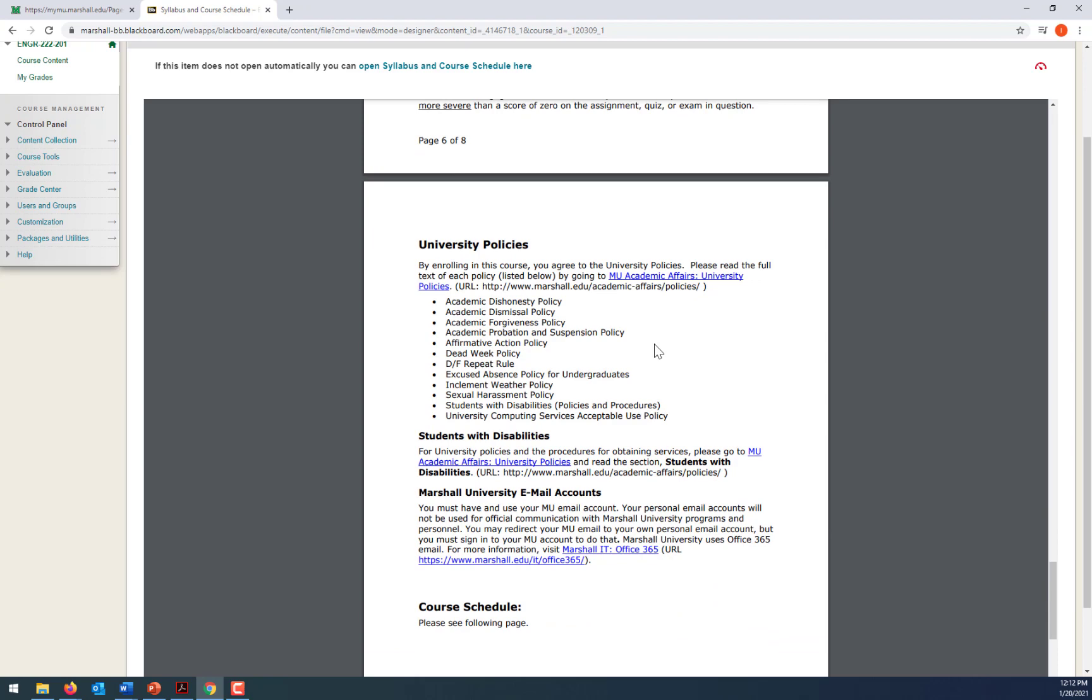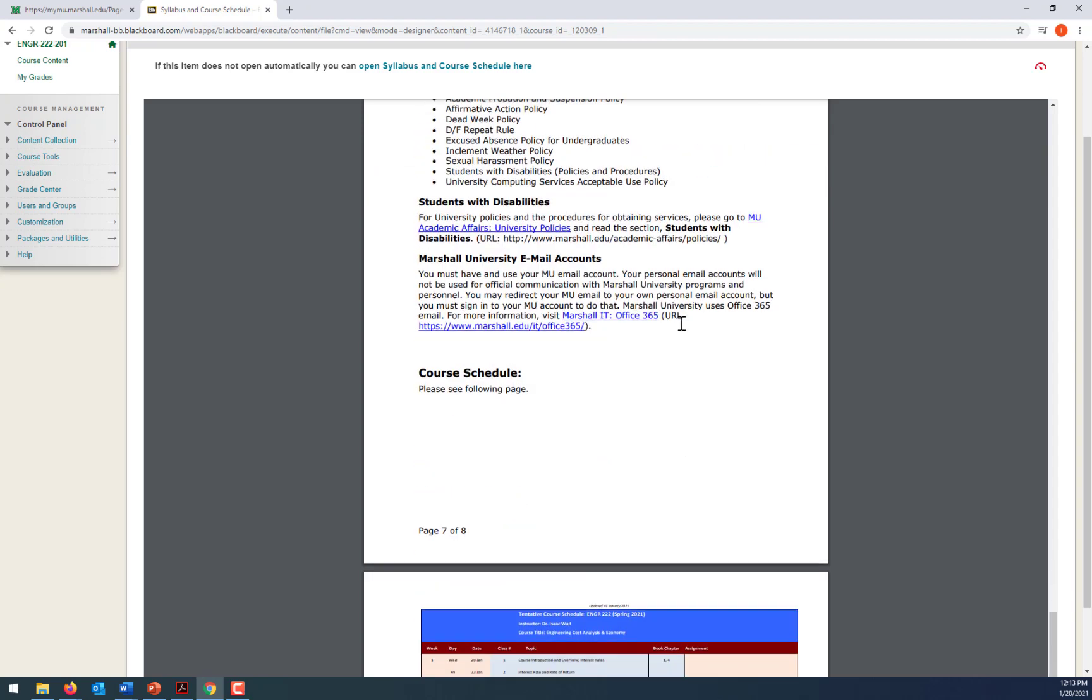There's a long list of university policies that I encourage you to review. Each of them can be found on the academic affairs website. If you're not in the habit of checking your Marshall email, you need to get into the habit. You can have it forward to a different email account if you want. I send out announcements to your Marshall email address, and if you need to get in touch with me, you should send me a message through your Marshall email address. They ask us not to communicate with students outside of their Marshall email address just because it's tough to know exactly the identity of the person that you're communicating with if it's not the Marshall address.